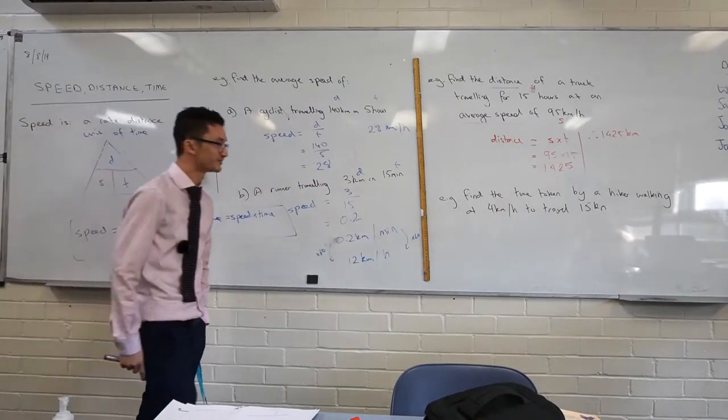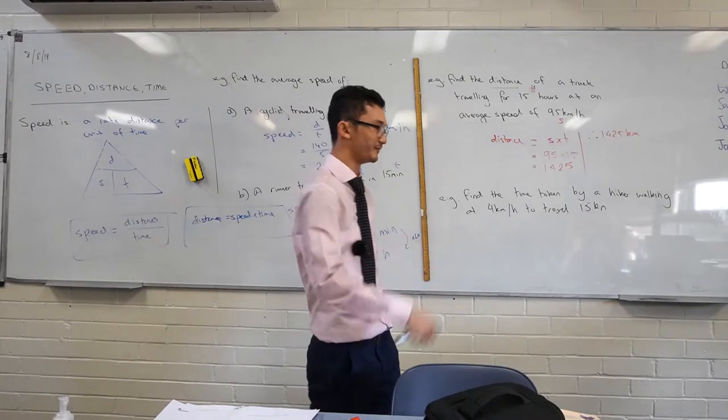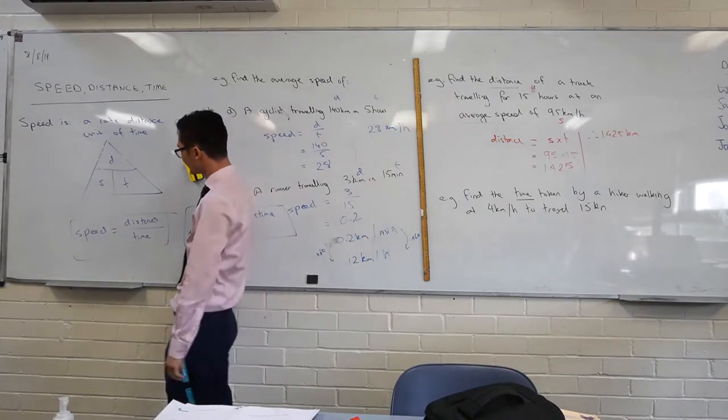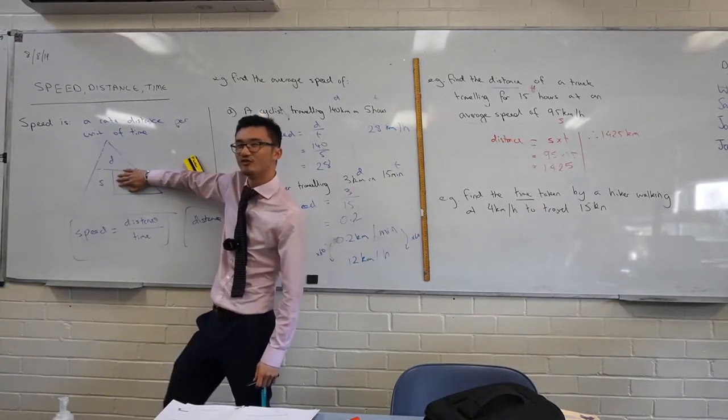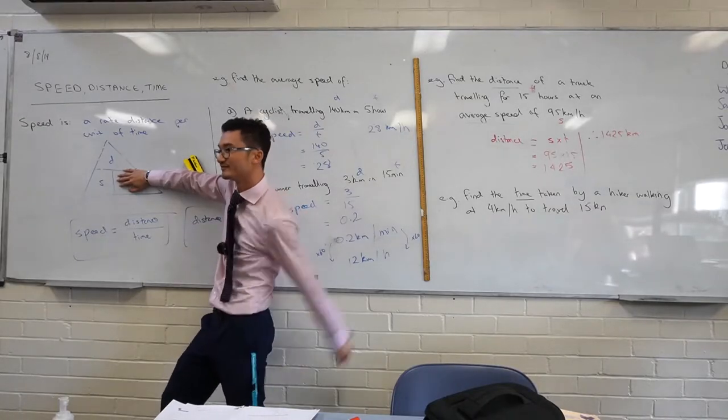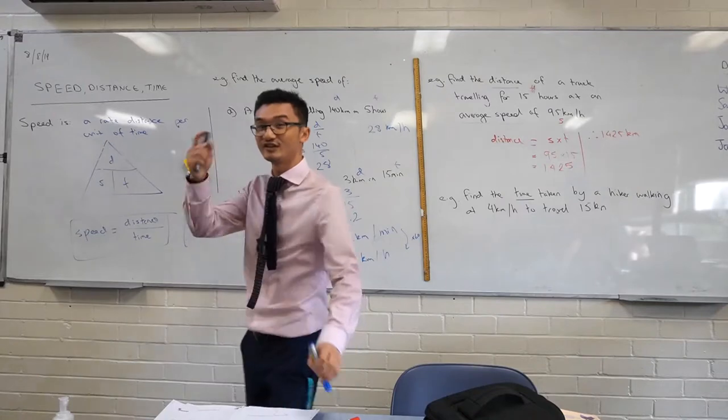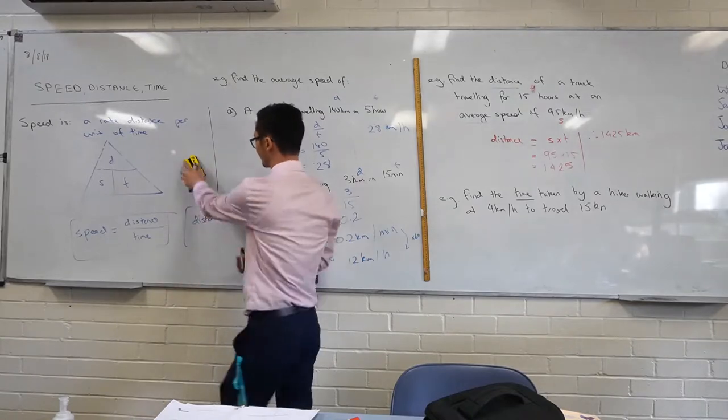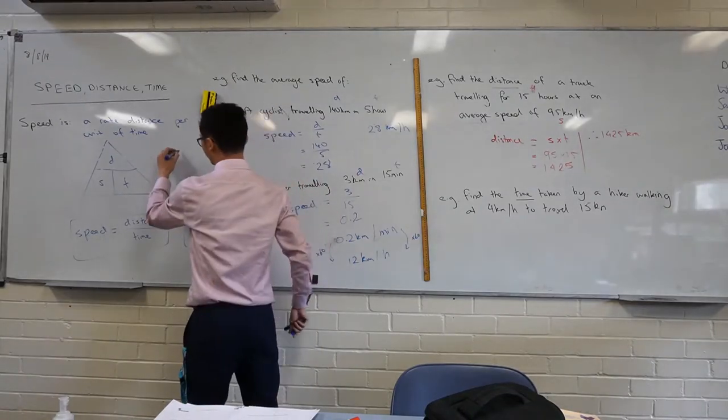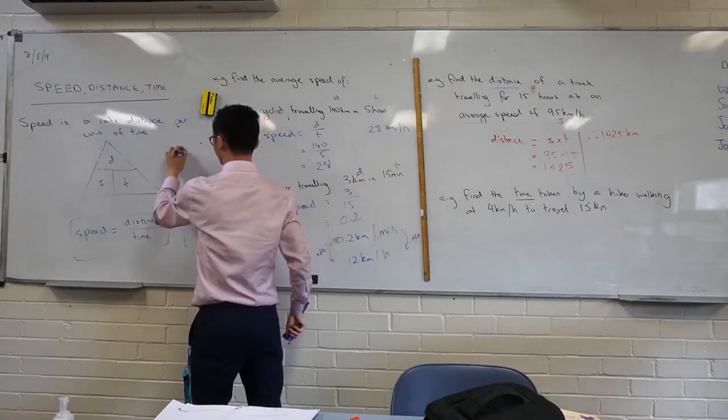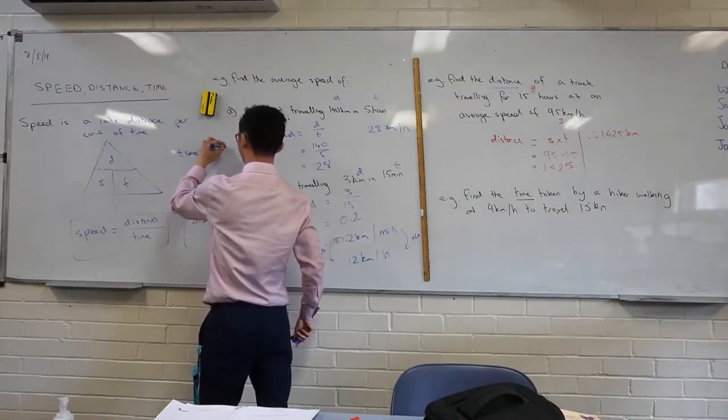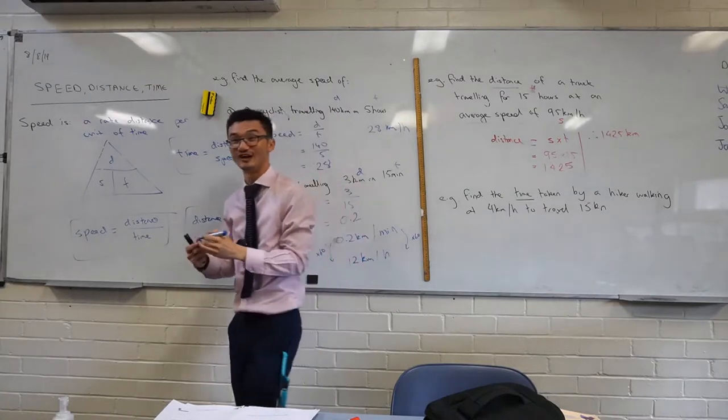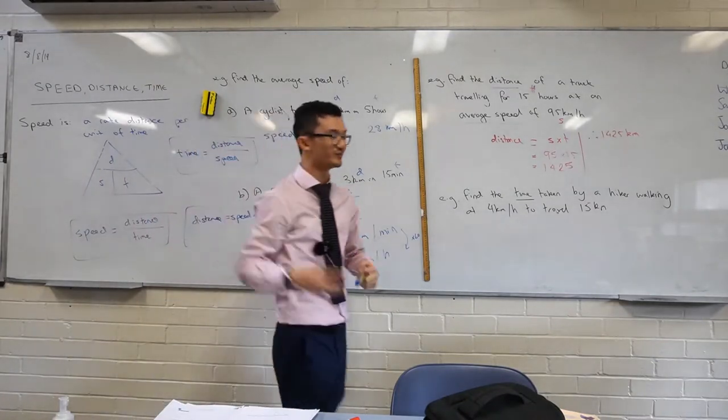This time, what am I trying to find? Time. I'm trying to find time. Always realize what variable you're looking for, and then we'll go back to our triangle. This time, I'm going to cover my t. But this time, what's the formula that I'm creating? It's a bit different, isn't it? Distance over speed. So anytime you're looking for that variable, you just cover it. If they're on top of each other, that's kind of like a fraction. So I can write that as a formula as well. I can see that time is equal to distance over speed. Rather than remembering these three separate formulas, I find it easier just to remember the triangle and then cover them in that way.